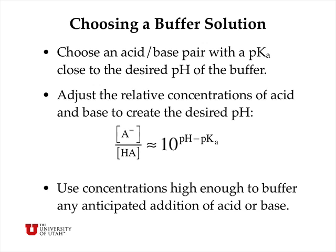So how would we choose a buffer solution? We would want to choose a conjugate acid-base pair that has a pKa of the acid close to the desired pH of the buffer solution. That way the relative amounts of acid and base in the solution are about the same and we have the maximum buffering effect.